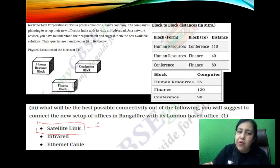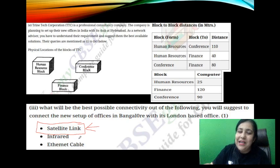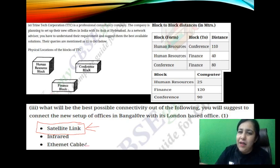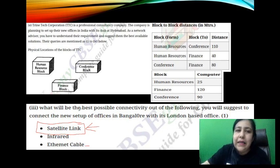Which wireless option? Satellite. Infrared is used for TV and AC remotes — there is no data transfer from London to Bangalore possible with infrared, as it cannot pass through hard obstacles. Ethernet cable is a copper wire used in local networks; since we are building a wide area network, Ethernet is not used for that. So the answer is satellite link.